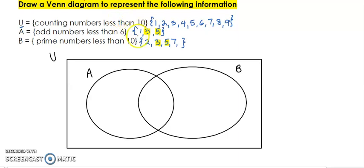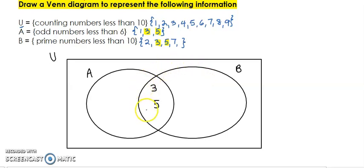We already identified that 3 and 5 are members of both sets. So we are going to put 3 and 5 where the two sets intersect or where they overlap. Because when we put them there, the 3 and the 5 are in Set A and they are also in Set B. I like to cross them off because I know I have put those already, and I also cross them off the universal set so I don't write them a second time.